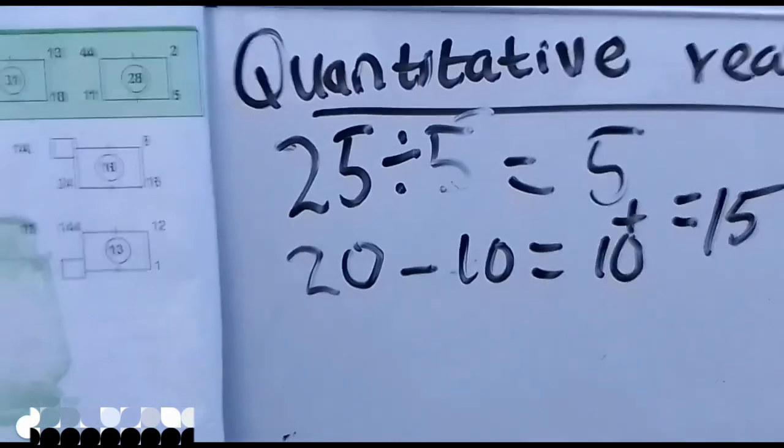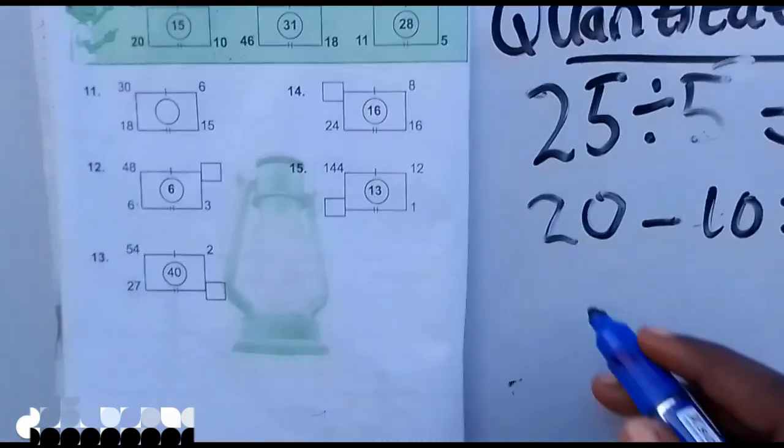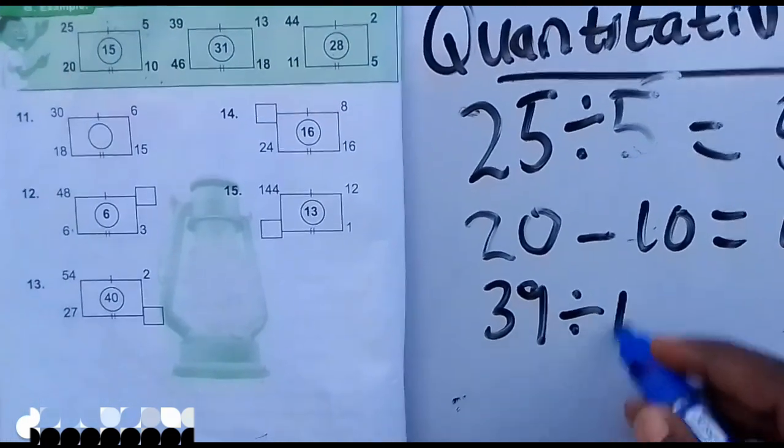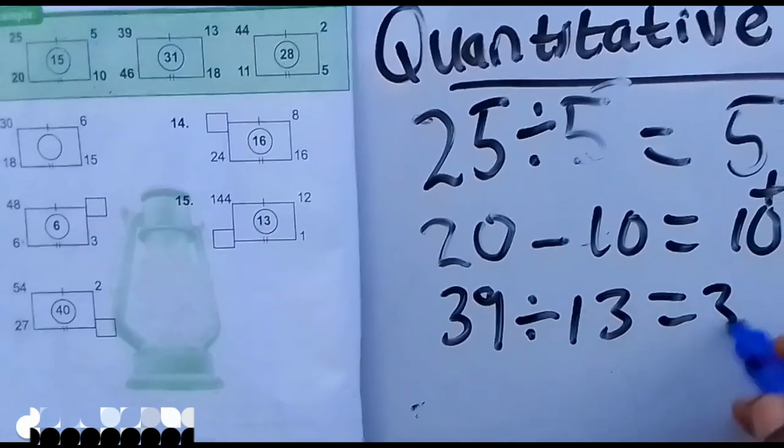For this other one we have 39 divided by 13, we have 3, and 46 minus 18 we have 28. So 28 plus 3 we have 31.